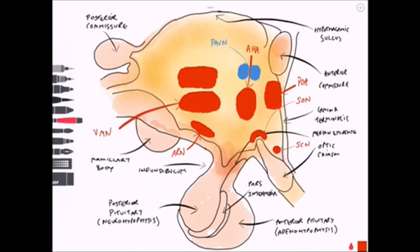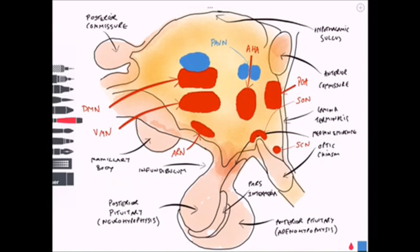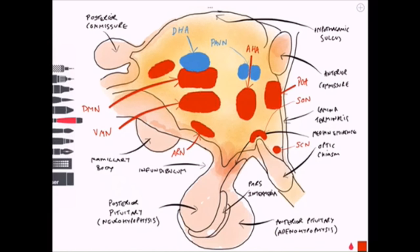We've got the VMN — the ventromedial nucleus — and the DMN, which is the dorsomedial nucleus. We also have the DHA, the dorsal hypothalamic area, and the PHA, the posterior hypothalamic area.